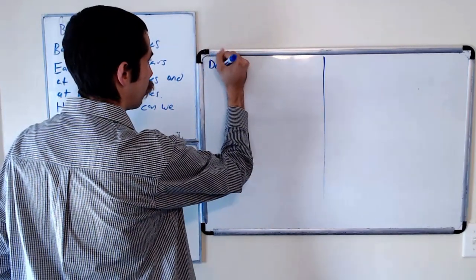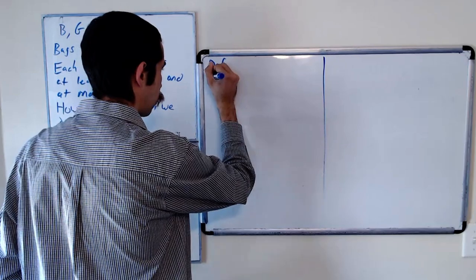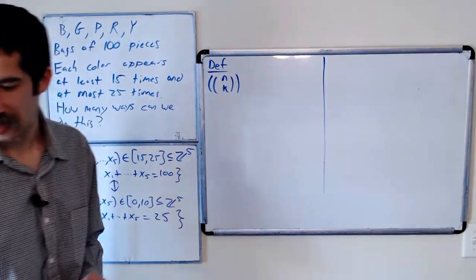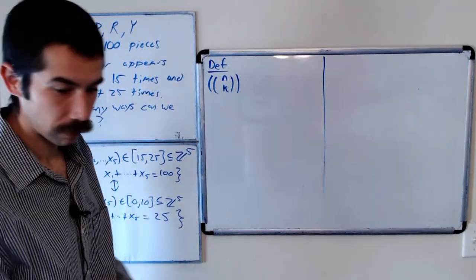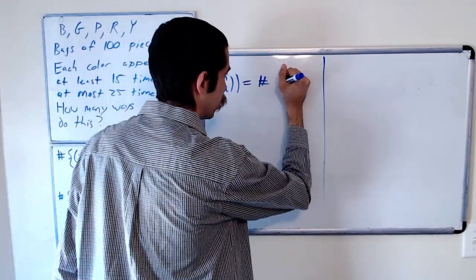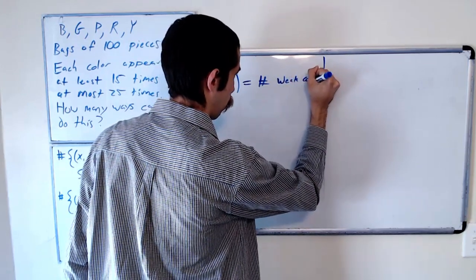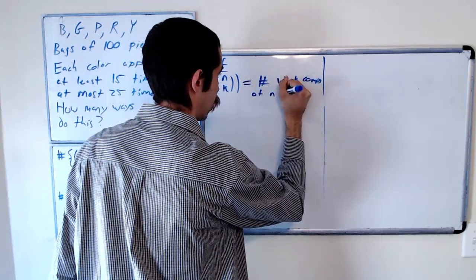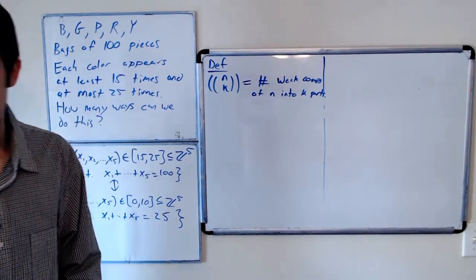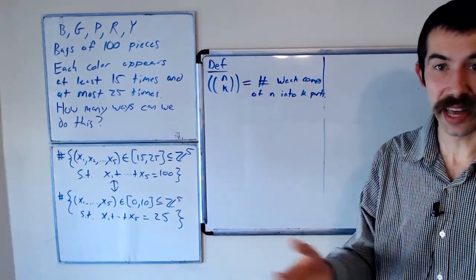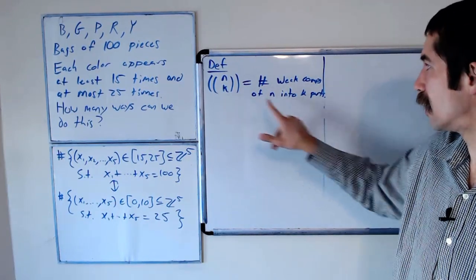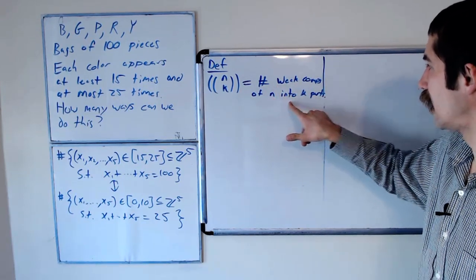So definition, and if you've taken combinatorics, you've probably seen this notation before. It's n multi-choose k. And this is equal to the number of weak compositions of n into k parts. What's a weak composition? It's a composition that allows some parts to be zero. And we use the notation n multi-choose k to denote weak compositions of n into k parts.